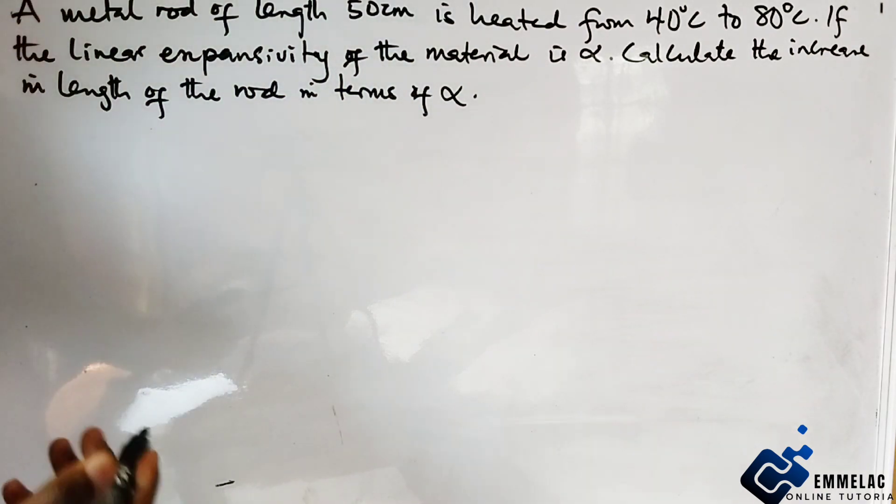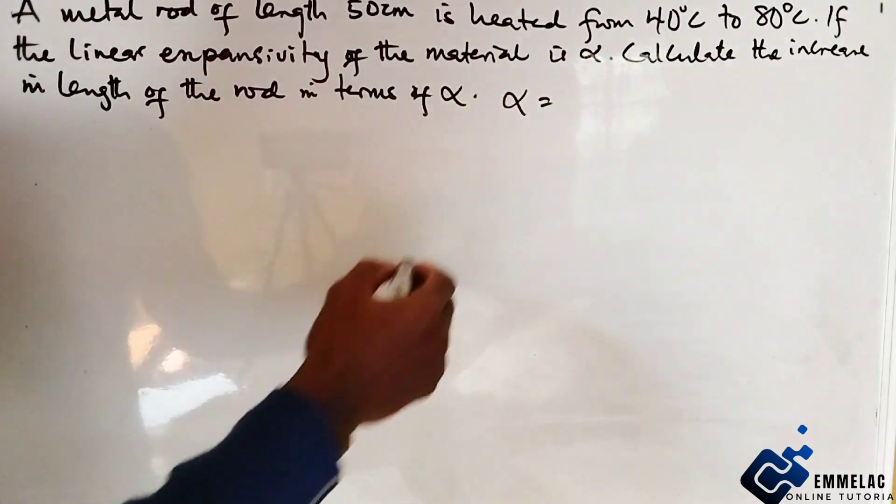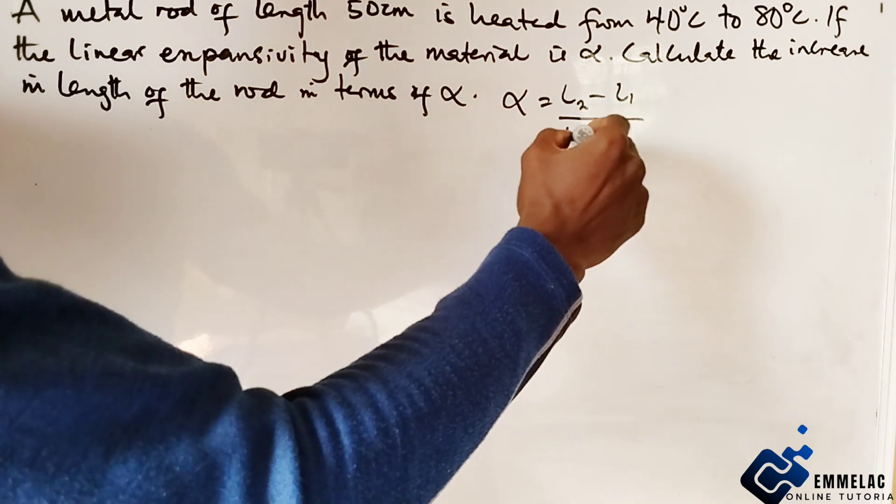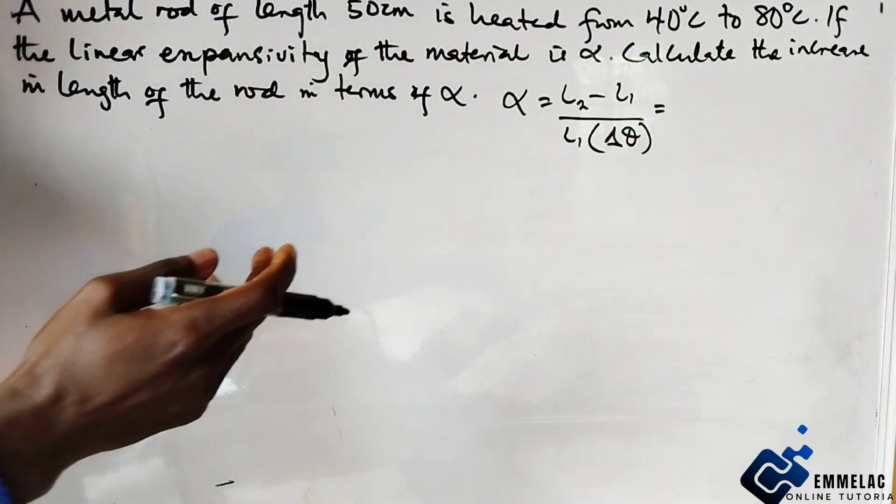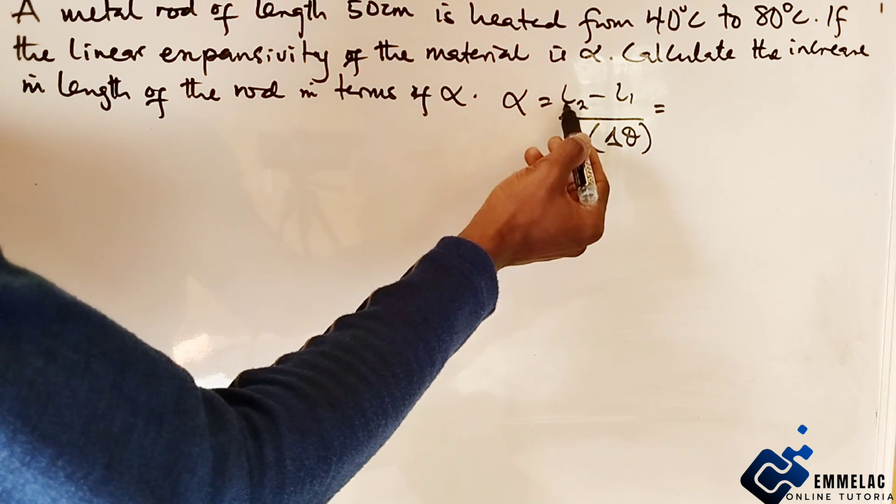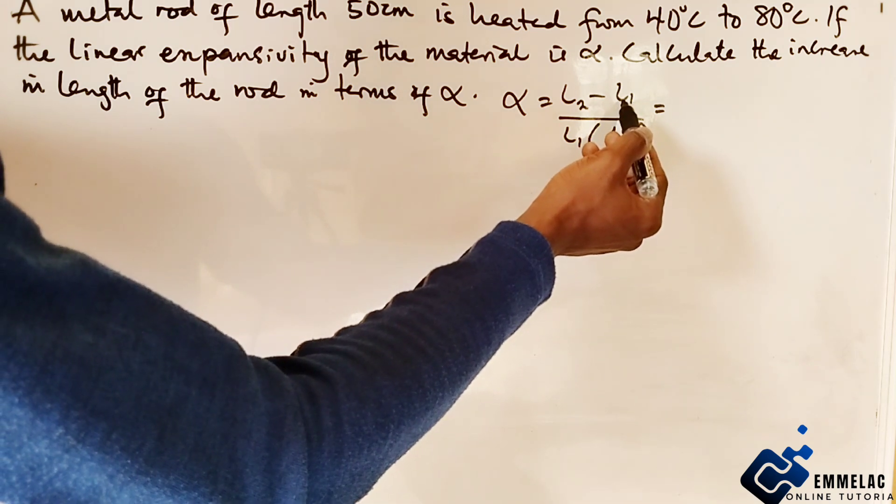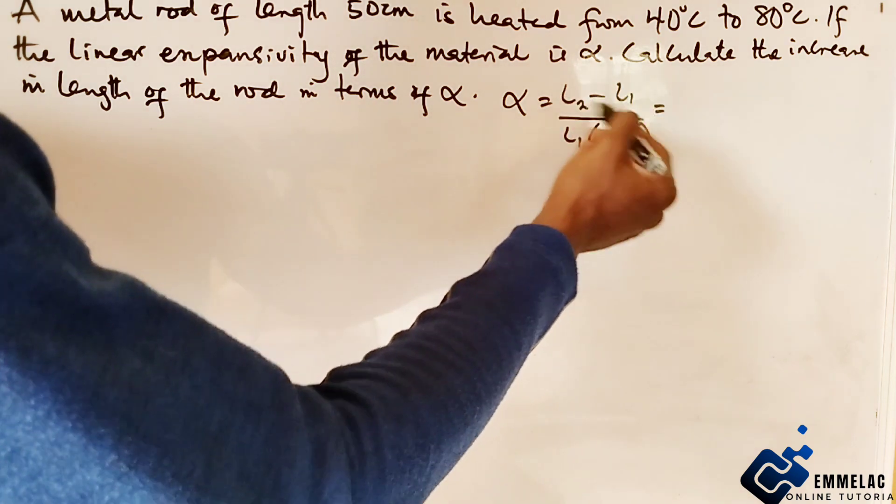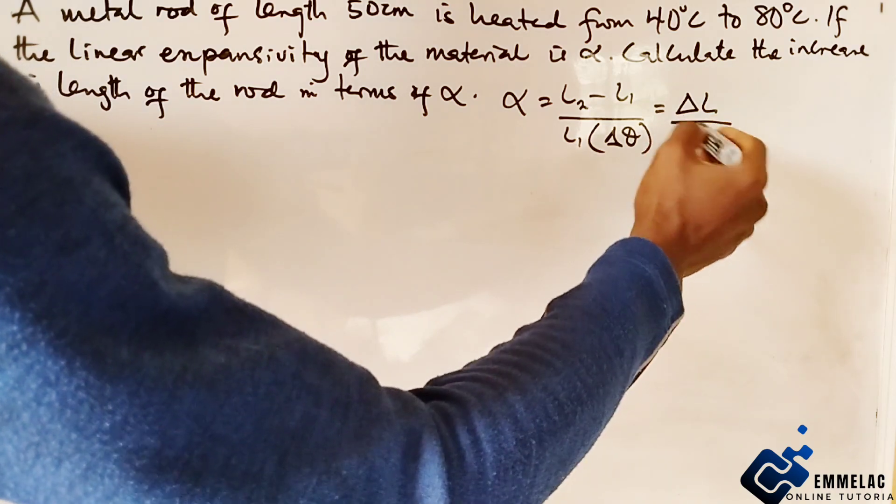We know that the linear expansivity is given by this formula. This signifies the increase in length, ΔL. This is the final length after the temperature increase, the initial length before the temperature increase, and the change in temperature. This formula can give us the change in length or the increase in length.